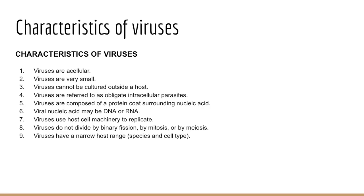At a minimum, a virus contains a protein coat surrounding some kind of nucleic acid; some viruses have an envelope outside that protein coat, others don't. Viruses may contain DNA or RNA — the vast majority possess one of those two, unlike living cells which possess both. Viruses use host cell machinery to replicate; they lack metabolic enzymes and ribosomes, so they take over host cell machinery to replicate their genome and produce proteins needed to build new virions. Viruses don't divide — they manufacture new virions but do not divide by binary fission, mitosis, or meiosis.